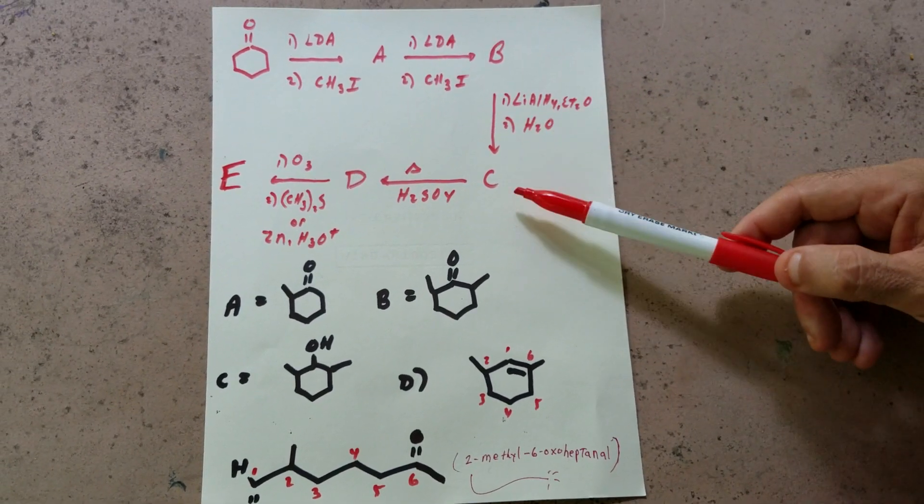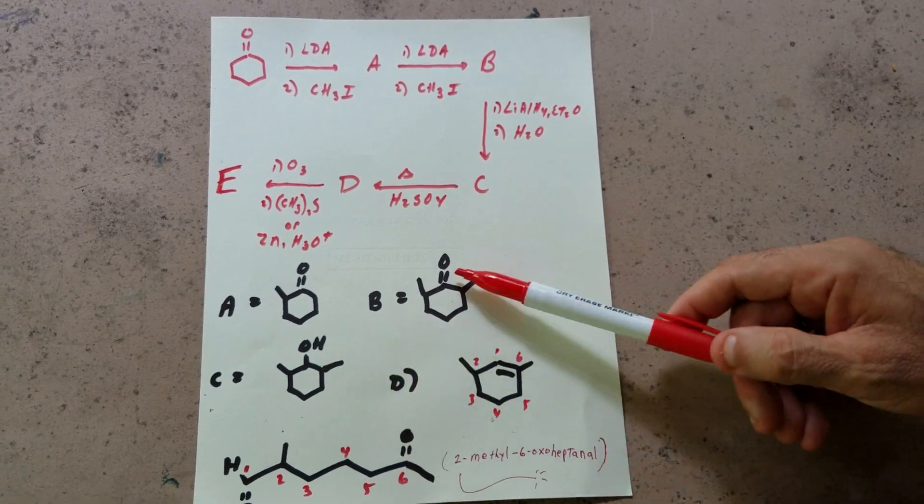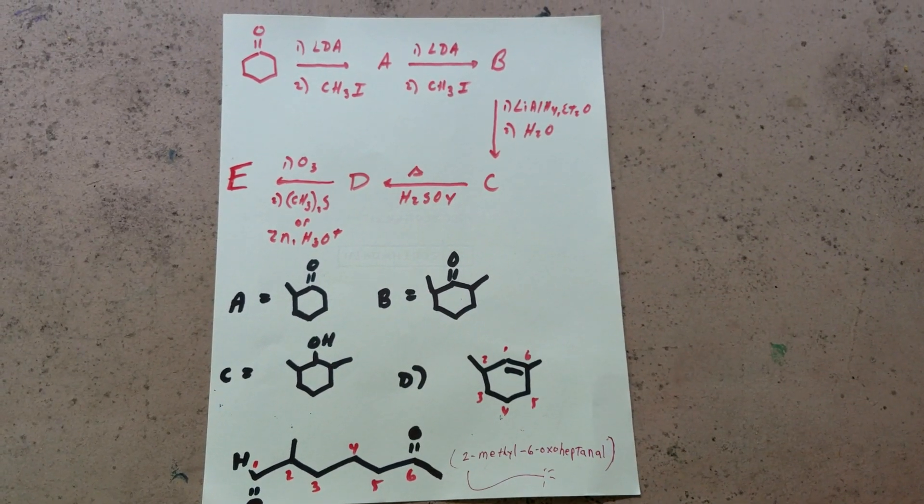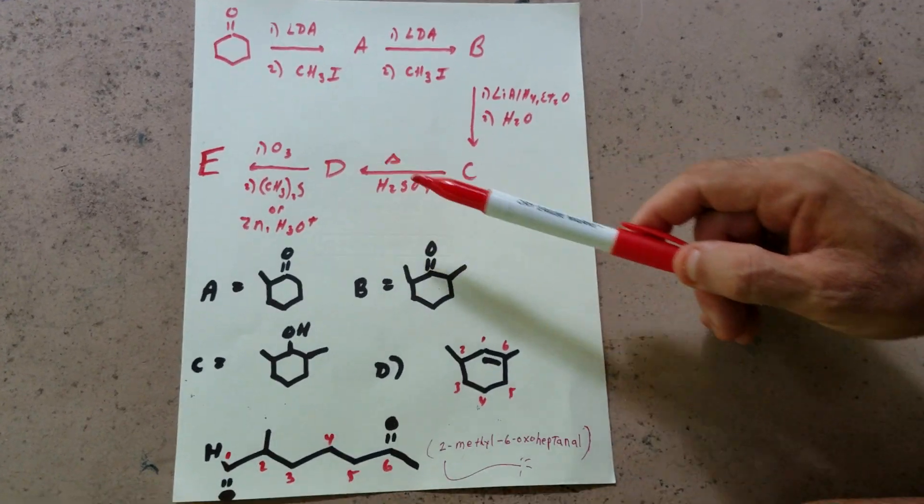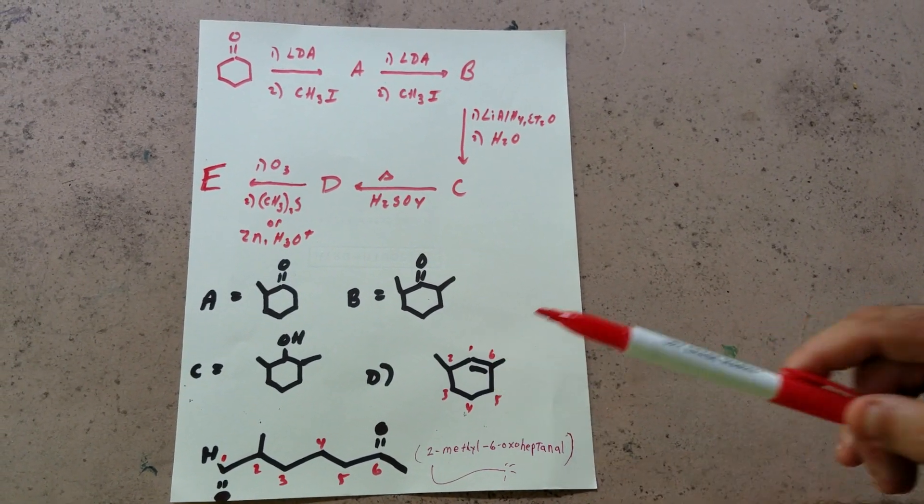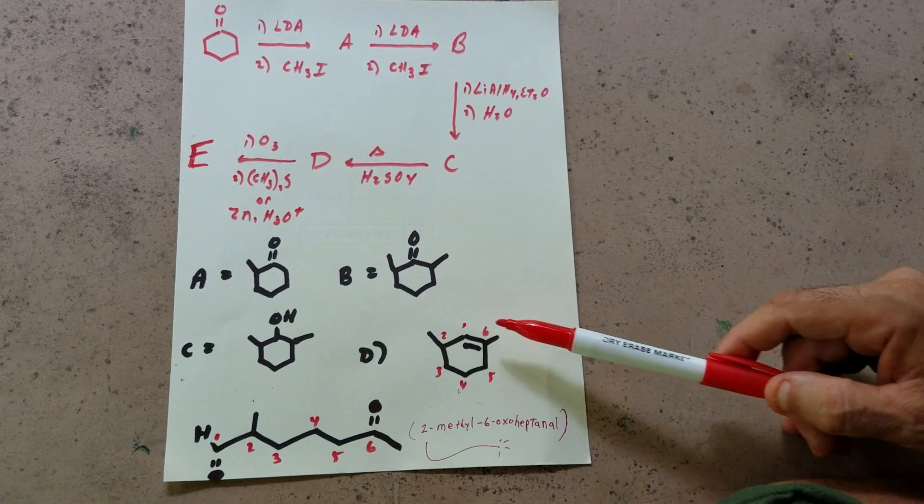Then from B to C, I simply reduce the ketone and that gives me my secondary alcohol. Then I'm going to heat it and do the E1 reaction. Now, hopefully you can get to that point.